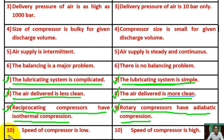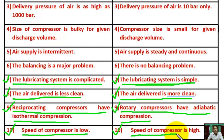Point 10: For reciprocating compressor, the speed of the compressor is low. For rotary compressor, the speed of the compressor is high — the speed of the rotary compressor can be as high as 50,000 RPM.